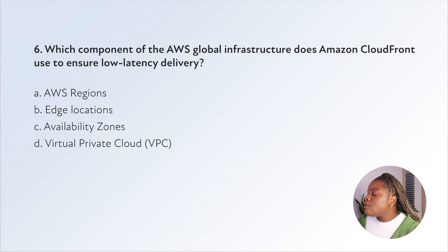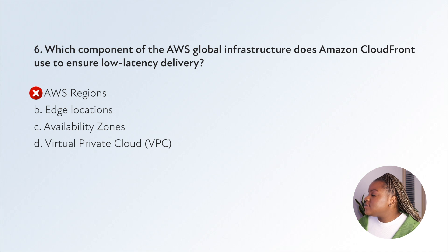Question six: which component of the AWS global infrastructure does Amazon CloudFront use to ensure low-latency delivery? Option A, AWS Regions, are physical locations around the world with a cluster of data centers — nothing to do with ensuring low latency by CloudFront. Option B, AWS edge locations, are data centers designed to deliver services with the lowest latency possible. Amazon has dozens spread across the world, closer to users than regions or availability zones, often in major cities, so responses can be faster.